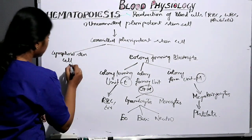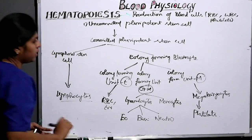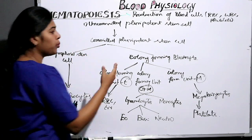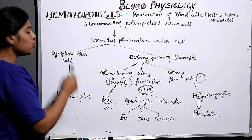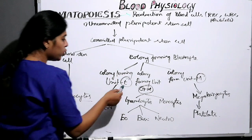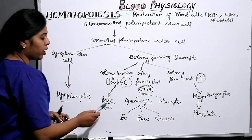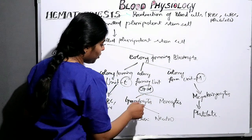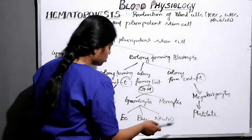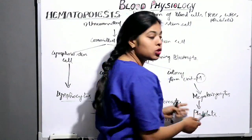The lymphoid stem cell gives rise to lymphocytes. So to summarize: the uncommitted pluripotent stem cell is converted into committed pluripotent stem cells, then divided into lymphoid stem cell and colony forming blastocyte. Colony forming unit E gives rise to red blood cells, unit GM gives rise to granulocytes and monocytes — neutrophils, eosinophils, and basophils — and colony forming unit EM megakaryocytes give rise to platelets.